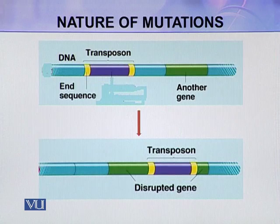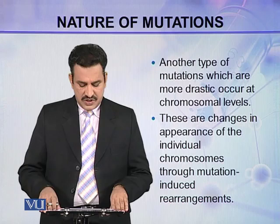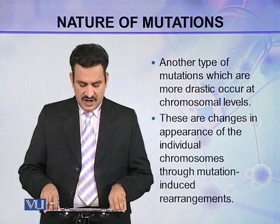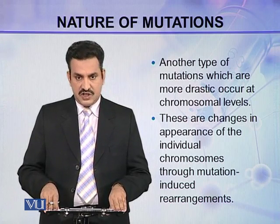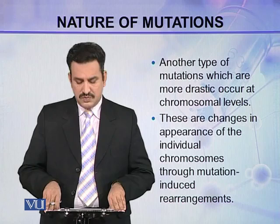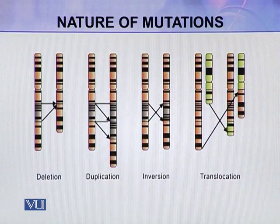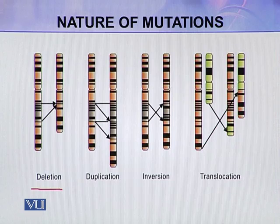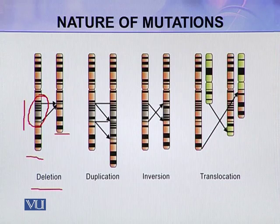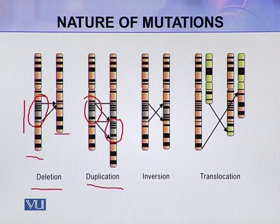Another type of more drastic mutation occurs at the chromosomal level. These are changes in the appearance of individual chromosomes through mutation-induced rearrangements. Examples include deletions, where a region is totally deleted from the chromosome so the mutated chromosome is lacking that portion, and duplications, where a portion is duplicated so the mutated chromosome carries a double copy of a particular sequence.